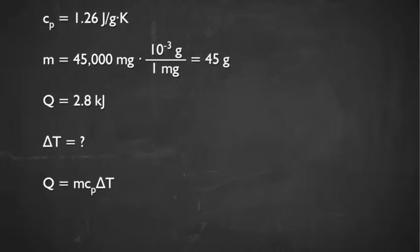We have 45 grams of butter. The heat, which is our q, is 2.8 kilojoules. We know that 1 kilojoule is equal to 10 to the 3 joules, so the number of joules we have is 2,800 joules.